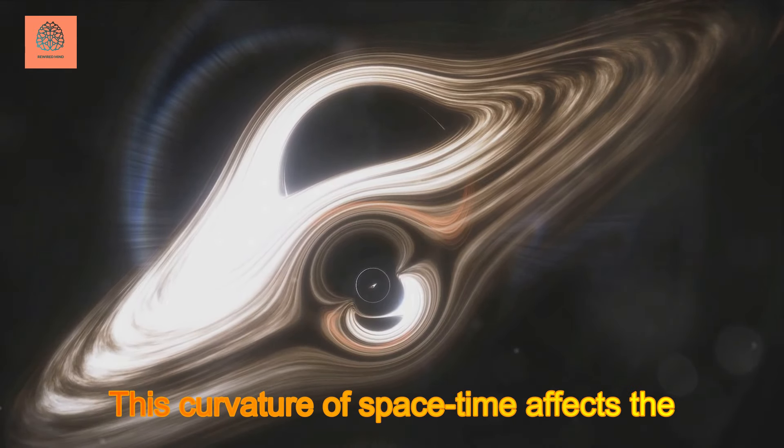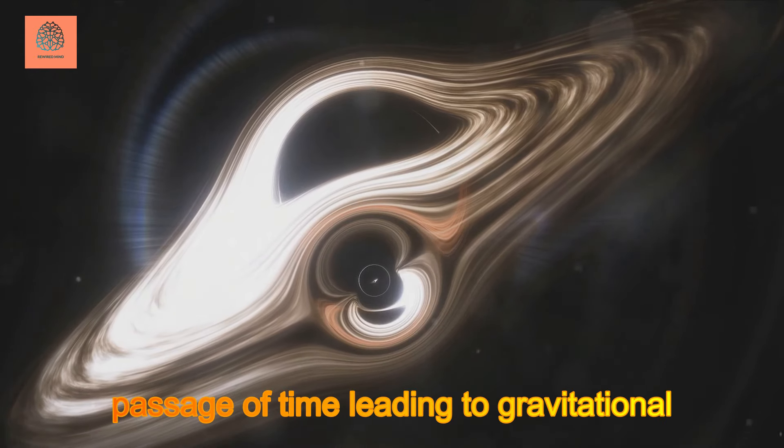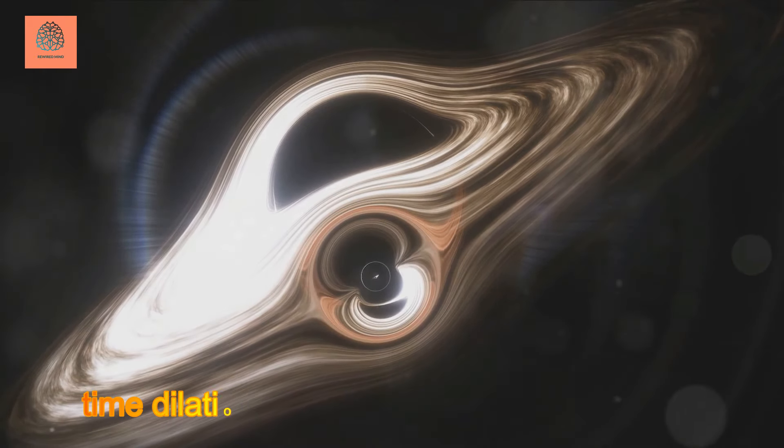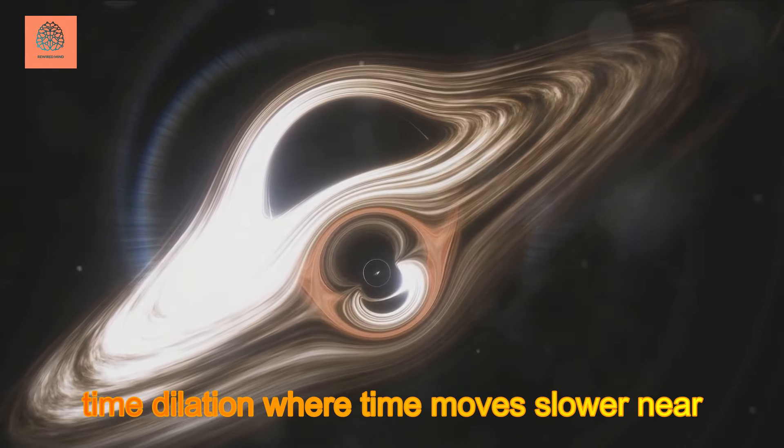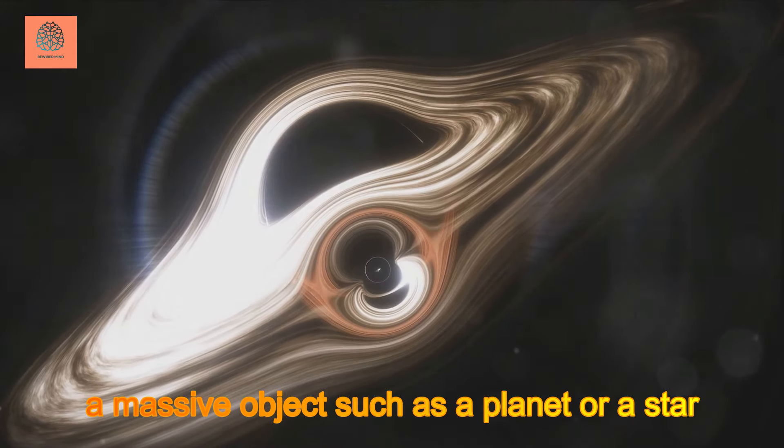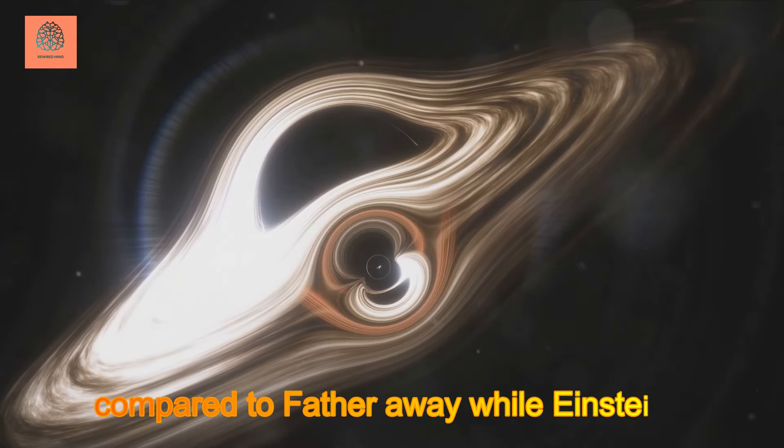This curvature of space-time affects the passage of time, leading to gravitational time dilation, where time moves slower near a massive object such as a planet or a star compared to farther away.